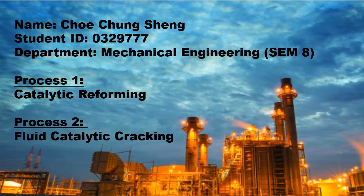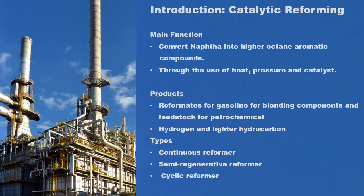We will start by discussing the first process, which is catalytic reforming. The main function of a catalytic reforming system is to convert feed in the form of low octane naphtha into higher aromatic compounds. Through the influence of heat, pressure, and catalysts, the feed is reformed into high octane aromatic compounds. The products formed are called reformate, used as gasoline blending components and feedstock for petrochemicals.